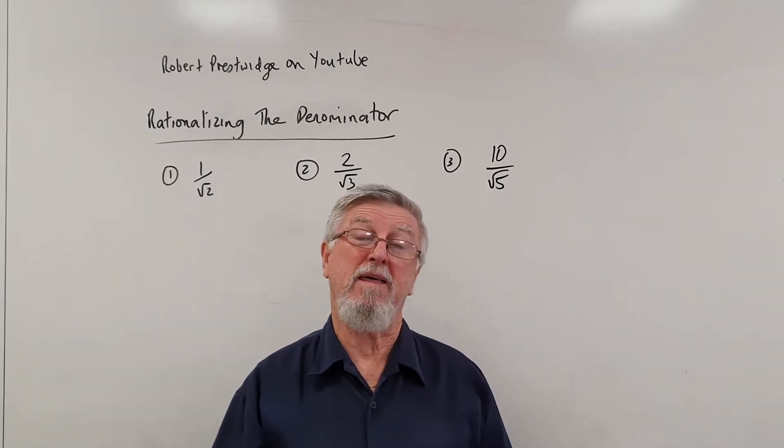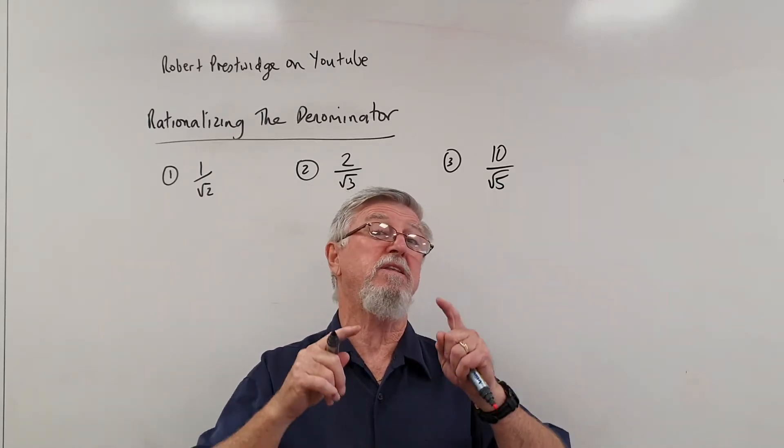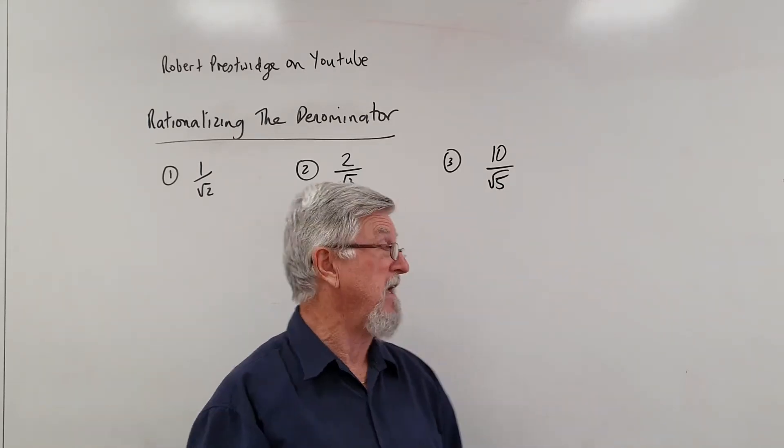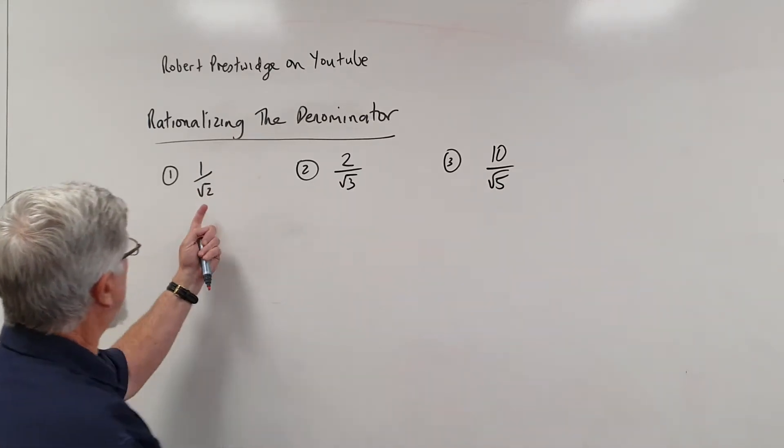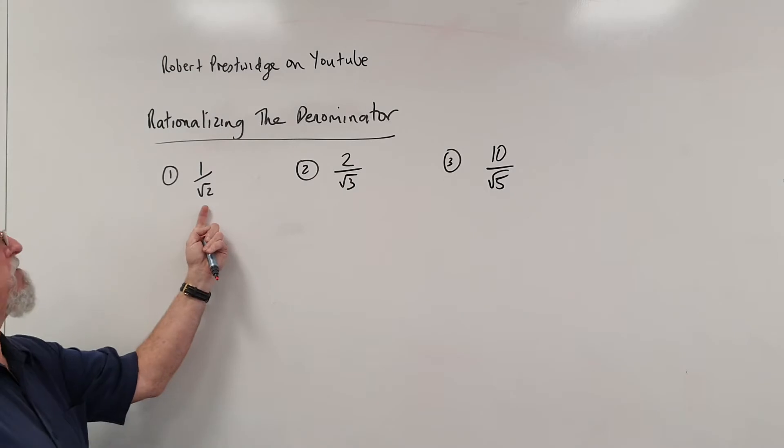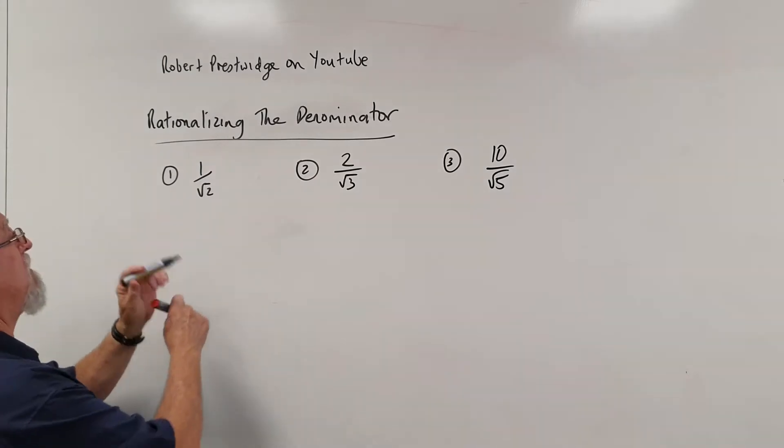Hi everyone, One Minute Maths. Rationalising the denominator. That means we do not want the square root on the bottom.